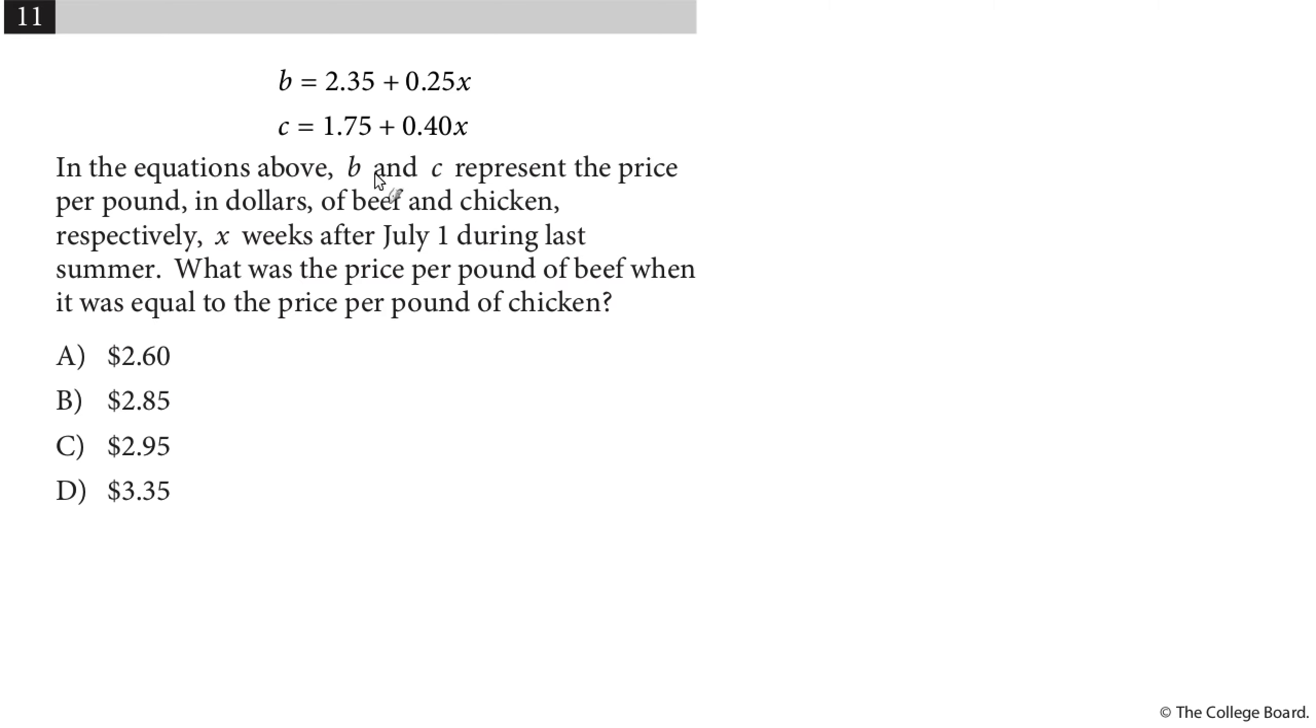We'll dive right in with this. I see two different functions, one B, one C, both equal to something in terms of X. In the equations above, B and C represent the price per pound in dollars of beef and chicken, respectively, X weeks after July 1st during the summer. What was the price per pound of beef when it was equal to the price per pound of chicken?